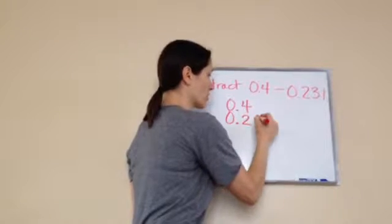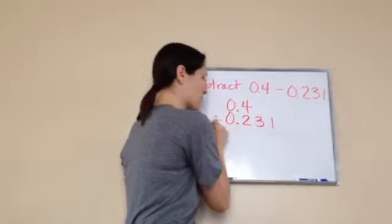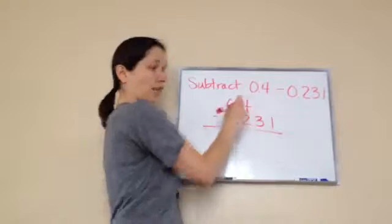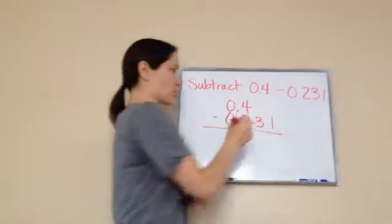Okay, 0.231. And I'm supposed to subtract this from this 4. You can put zeros in there. Yes, you should.